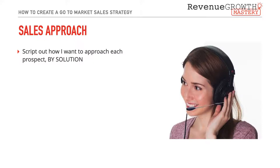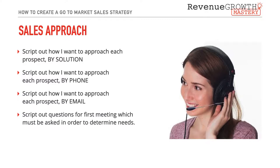Next, look at the sales approach. Script out how you're going to approach each prospect by solution, how you'll approach them on the phone, how you'll approach them by email, and what questions to ask in the first meeting to determine if this prospect is a good fit. This may seem fundamental, but it's critical — many salespeople get hung up figuring out on the fly what to say, how to handle objections, what to do when prospects don't take calls, or how to communicate in writing. You have to figure all this out upfront if you expect to launch quickly.